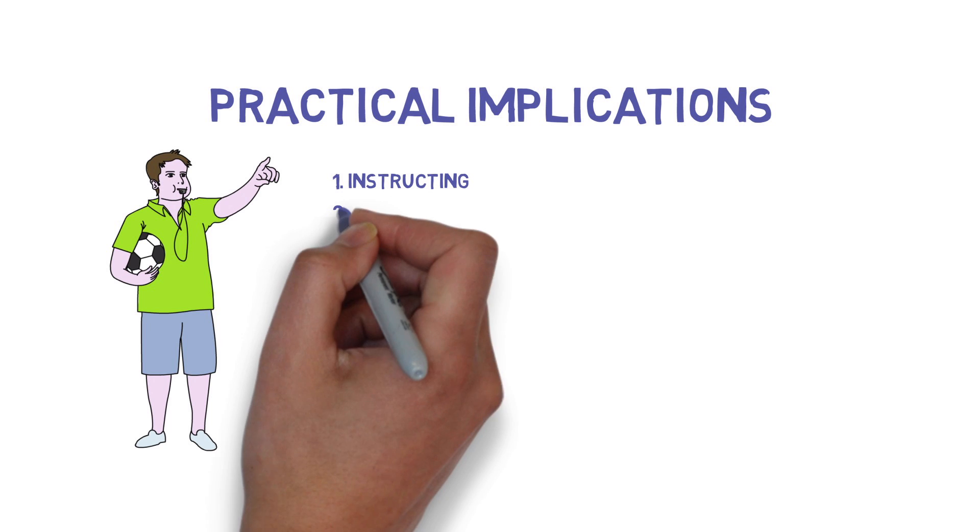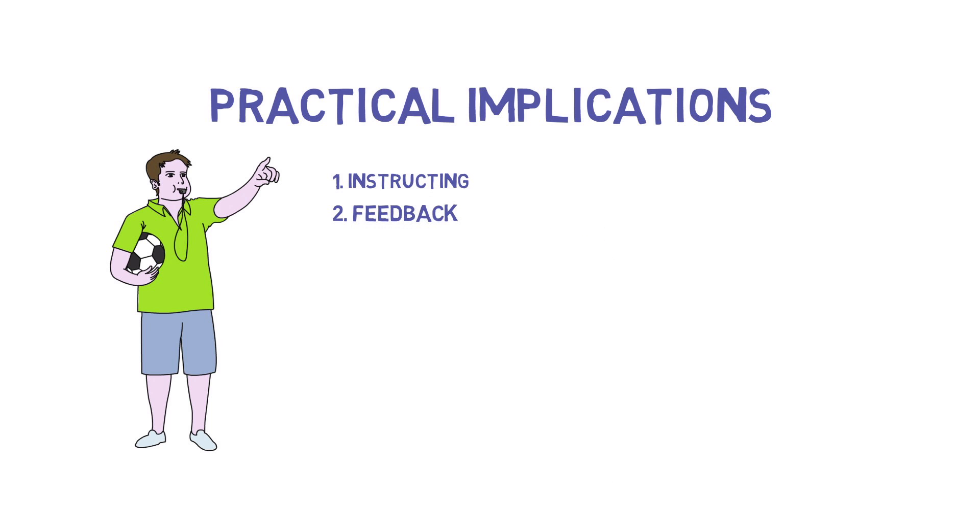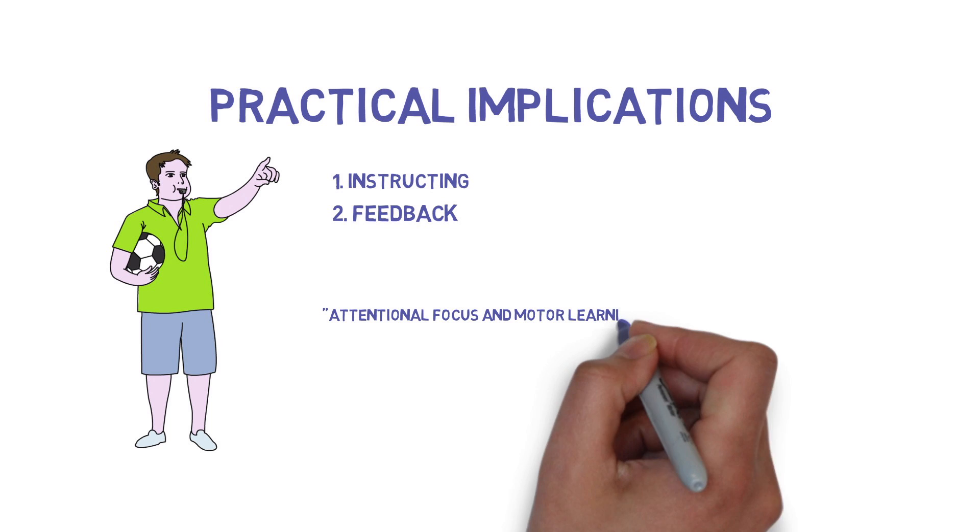Secondly, coaches should avoid giving feedback that brings the athlete back into an internal focus of attention during movement. An example of this type of feedback to avoid is 'that kick missed left, try straightening up your body before kicking.'